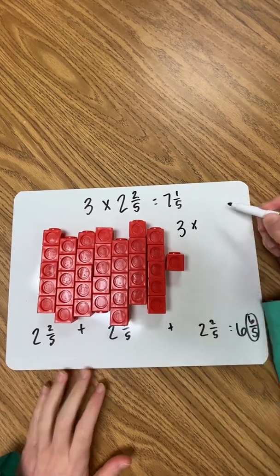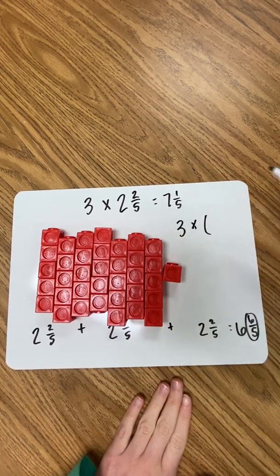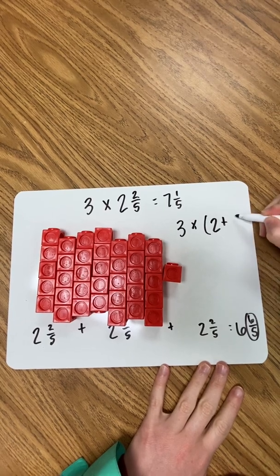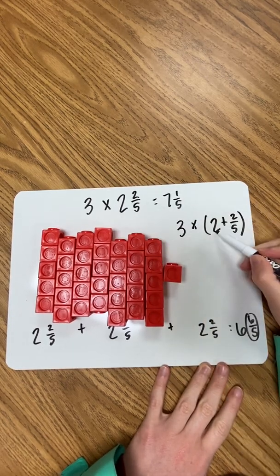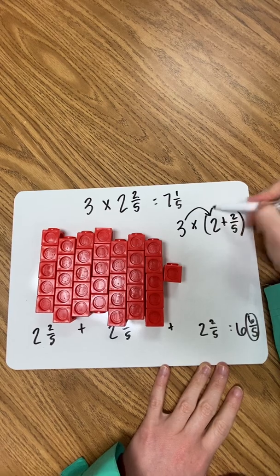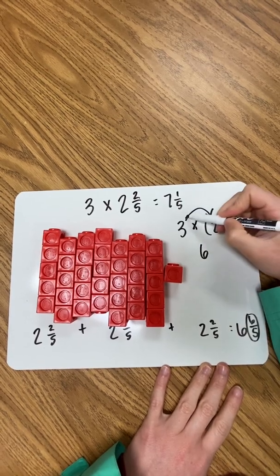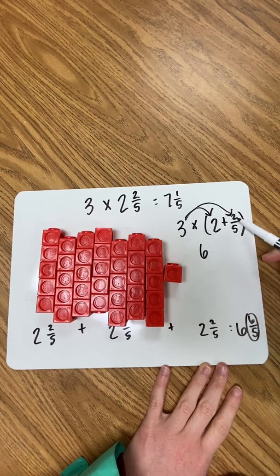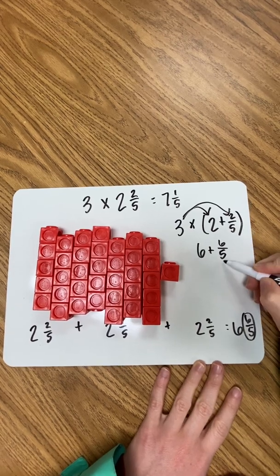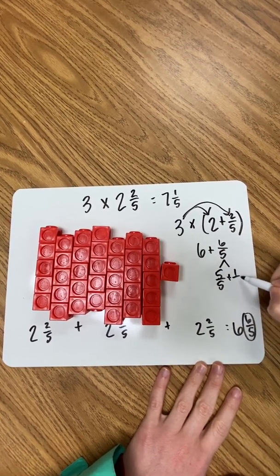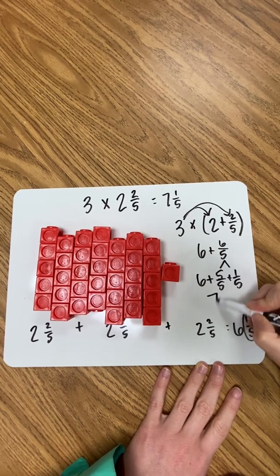This also helps students see the distributive property. They know two and two-fifths means two plus two-fifths — that plus sign is sort of invisible but that's what it means. So three groups of two is six, and three groups of two-fifths — three times two is six again — gives six-fifths. Combined, that's six and six-fifths, which they decompose to one whole and one-fifth, giving six plus one whole, which is seven and one-fifth.